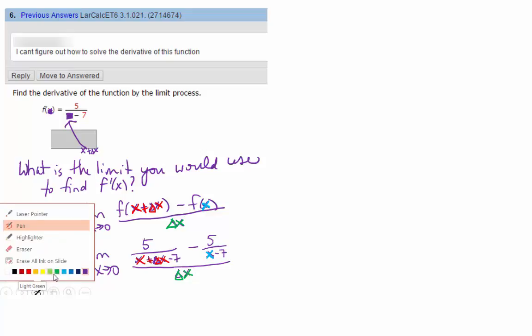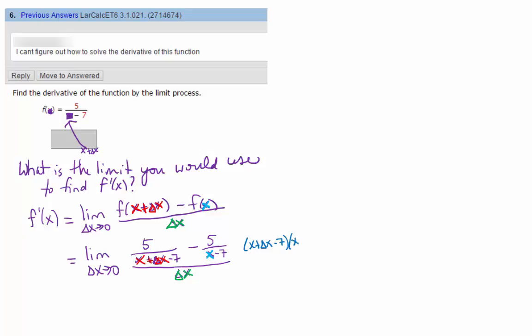So what I'm going to do is, what is the LCD? x plus delta x minus 7 times the other denominator, right? I'm going to multiply that in the top and the bottom. Okay, these are unique factors. And so we have to multiply them to get both of the denominators to cancel.